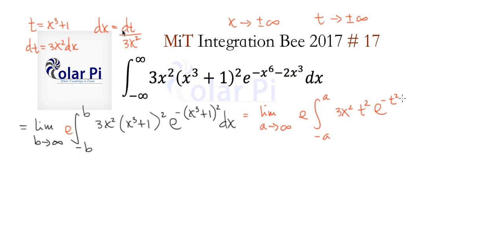Not a problem because dx is dt over 3x squared, so we see that it's going to disappear. And so we go like that, and now our integral is all in terms of t.